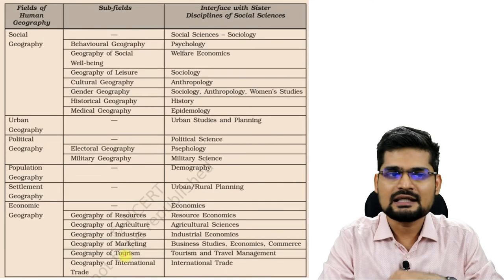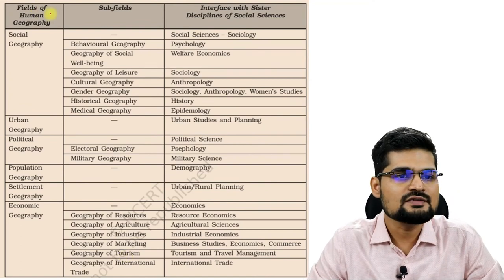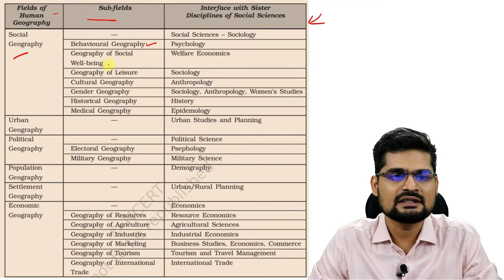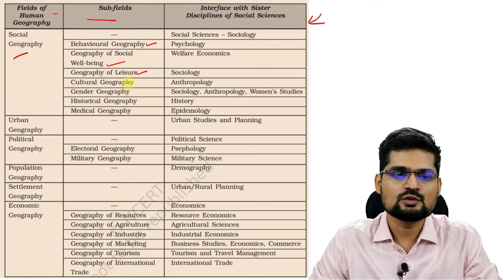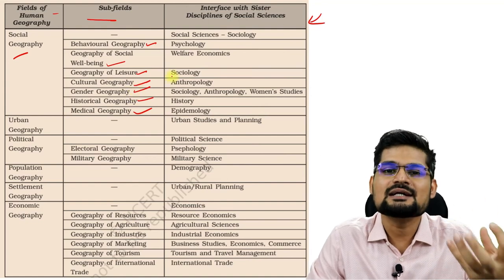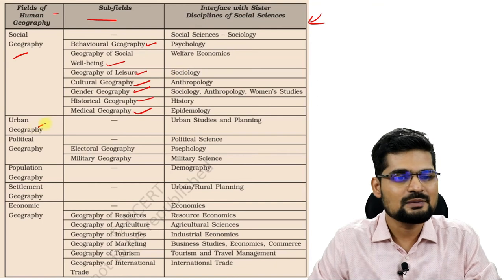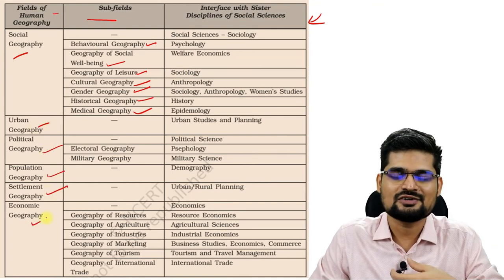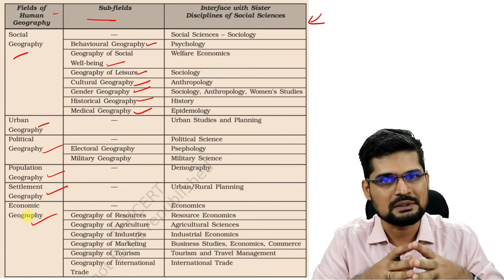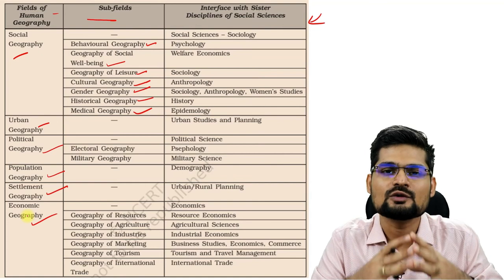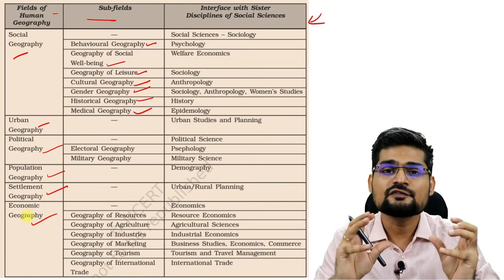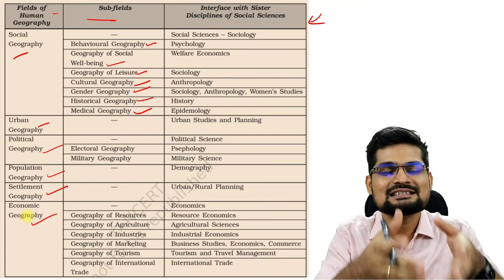Another table here shows the fields of human geography defined. In human geography, one part is social geography with behavioral geography as a subfield, well-being as another field, and geography of leisure or tourism. Then you have cultural geography, gender geography, historical geography, medical geography — all coming up as subfields within human-created geographies. Urban geography, political geography, population geography, settlement geography, economic geography — these are all major fields of human geography under which we study several subfields. Throughout the lectures on human geography, this is what we are going to study. That's the important core, the nature, and also the scope of human geography.